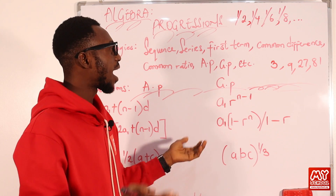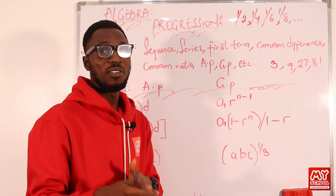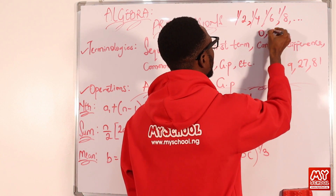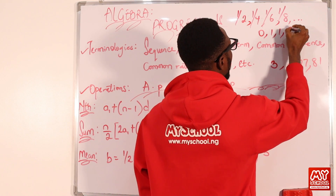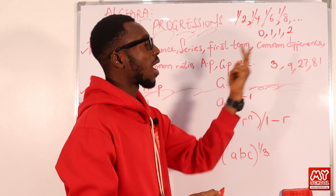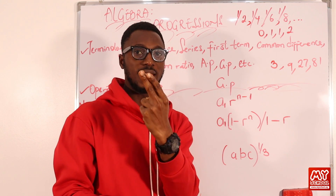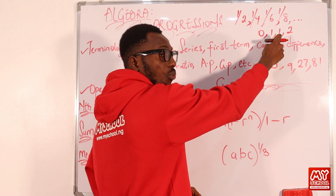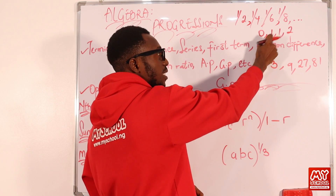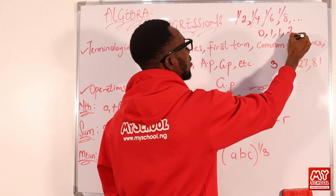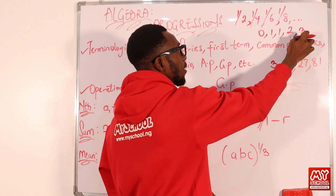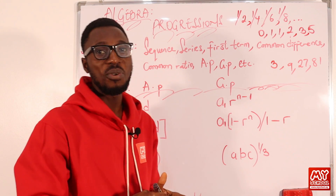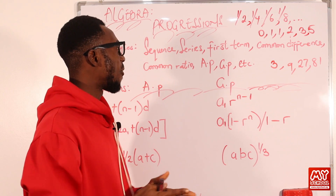We have other types like the Fibonacci kind of progression. In Fibonacci, you add the two previous terms together to get the next term. For example, starting with 0 and 1: 1 plus 0 is 1, 1 plus 1 is 2, 2 plus 1 is 3, 3 plus 2 is 5. We also have other types of progressions like the triangular, the square, the cube, and the likes.